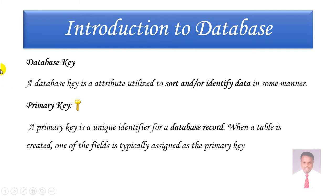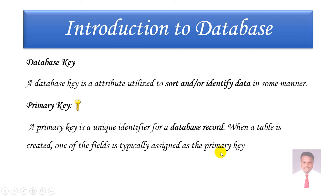Now we are going to discuss keys. Keys are used to establish relationships between tables. A database key is an attribute used to sort and identify data in some manner. What is a primary key? A primary key is a unique identifier for a database record. When a table is created, one of the fields is typically assigned as a primary key. In order to retrieve information efficiently, we need a primary key.